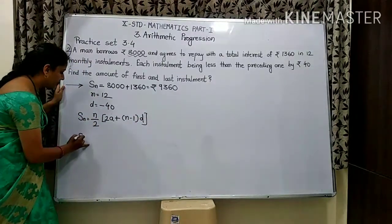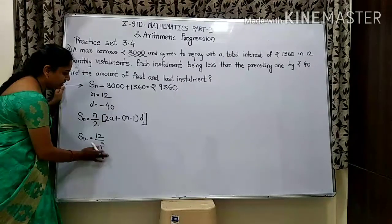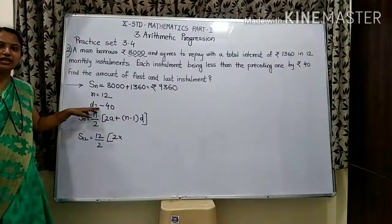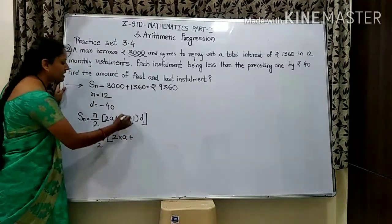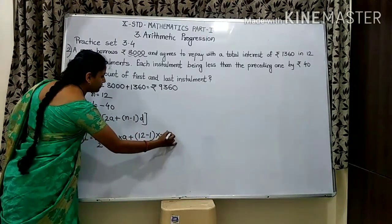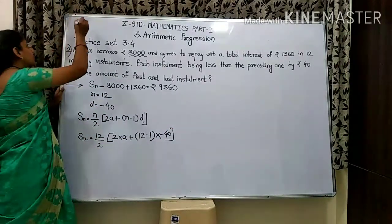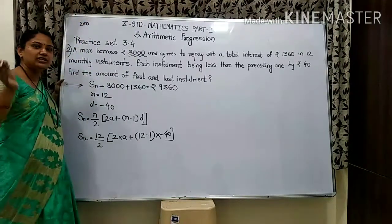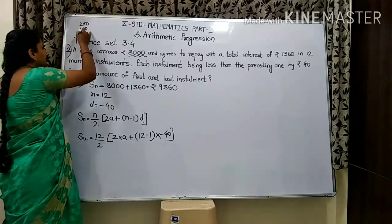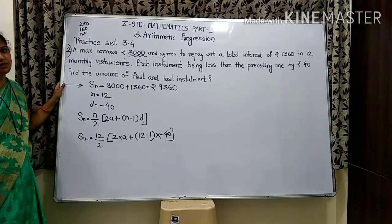Here n = 12, so we write 12/2 in bracket. The first installment is 'a'. Each subsequent installment decreases: the second is 40 less, the third is 40 less again, so the common difference d = −40. S12 = 9,360.